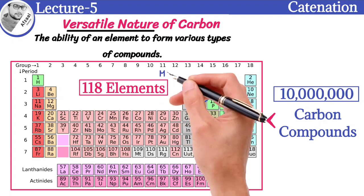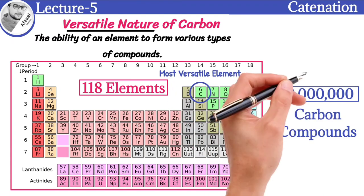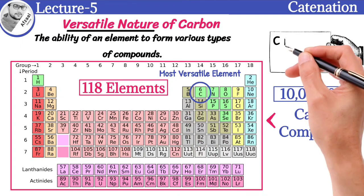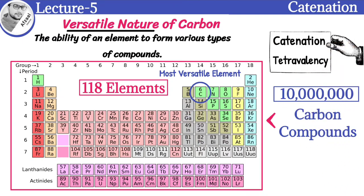So carbon is the most versatile element. The two characteristic features seen in carbon, catenation and tetravalency, make carbon the most versatile element.